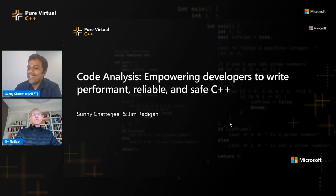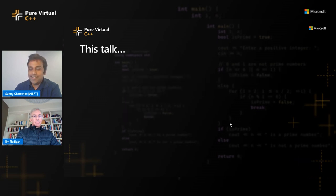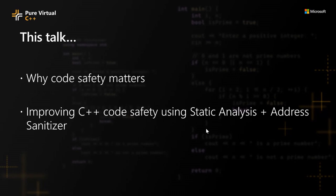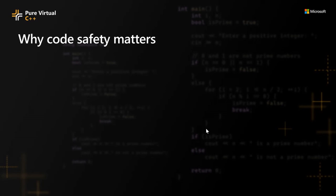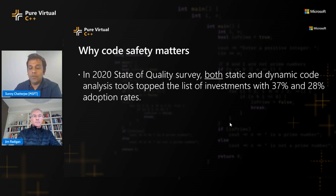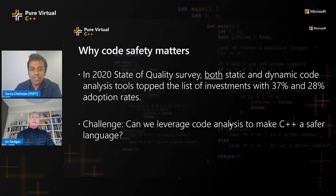I'll cover the topics for today's talk. First I'll go over why code safety matters, then I'll talk about how you can improve code safety using static analysis principles, and Jim will go over how you can use AddressSanitizer to improve the safety of your code. So why does code safety matter? In the 2020 State of Quality survey, developers were asked what sort of analysis tools they are investing in to improve the reliability and safety of their code, and both static and dynamic code analysis tools topped that list.